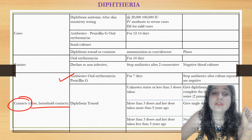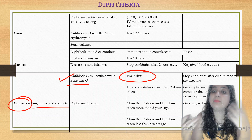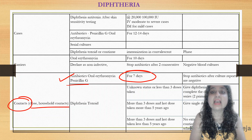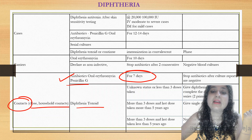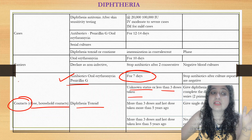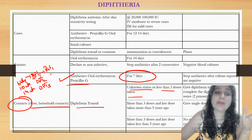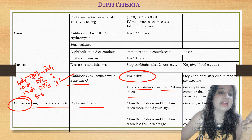For diphtheria contacts: erythromycin or penicillin G is given for seven days to all contacts, irrespective of their immunization status. Antibiotics are stopped after cultures are negative. Regarding diphtheria vaccine: if immunization status is unknown or the person has taken fewer than three primary doses — primary doses are DPT 1, 2, and 3 given at six, ten, and fourteen weeks as Penta 1, 2, and 3.